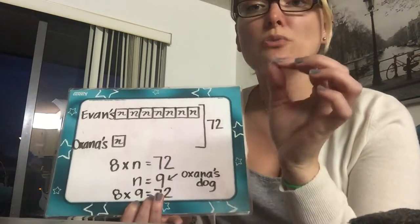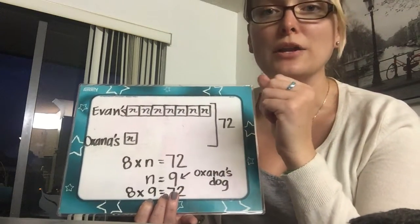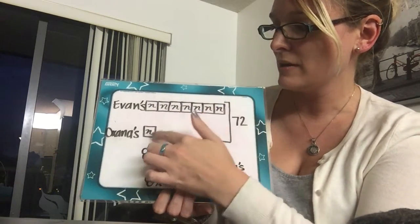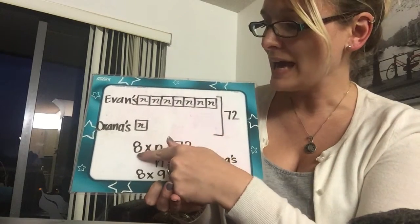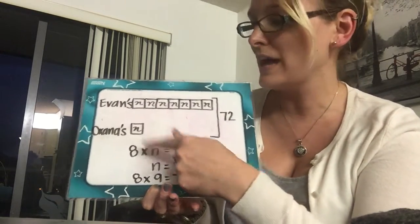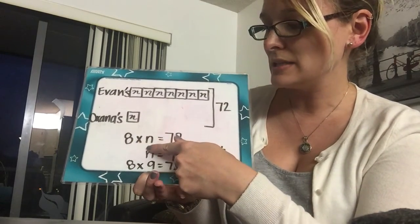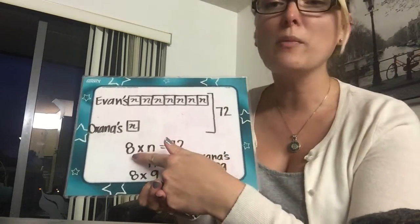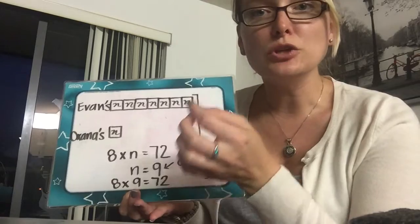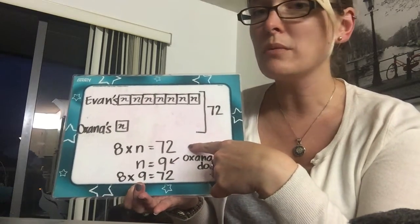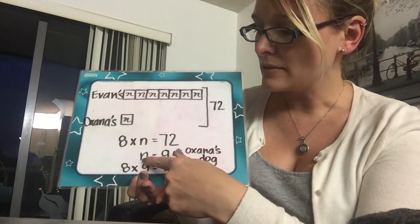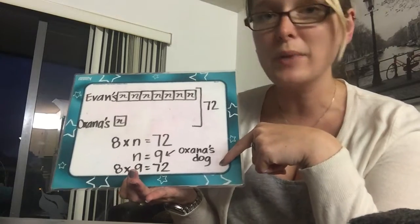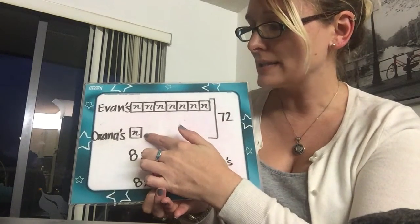First step, after drawing a model, is step two: write an equation. Our equation is the number of boxes we have — that's eight. We have eight of Oksana's dog here. Eight times the unknown N equals 72. I know my multiplication facts; if you didn't, you do whatever you have to do to solve this. You find that N equals nine. That's how much Oksana's dog weighs — nine pounds.